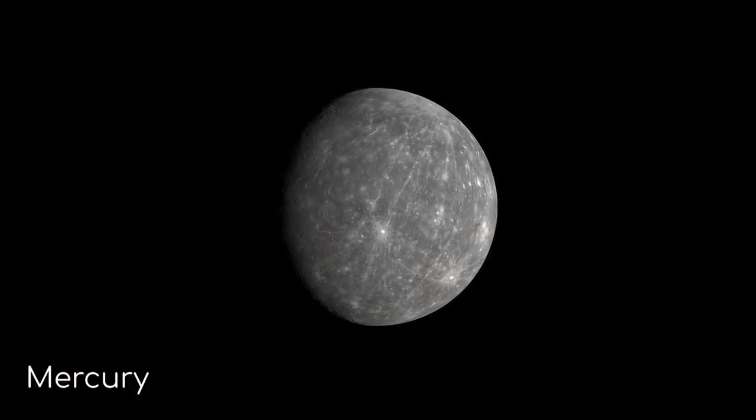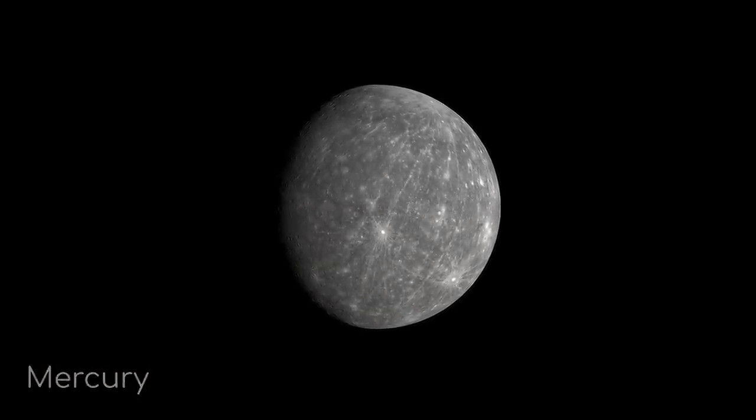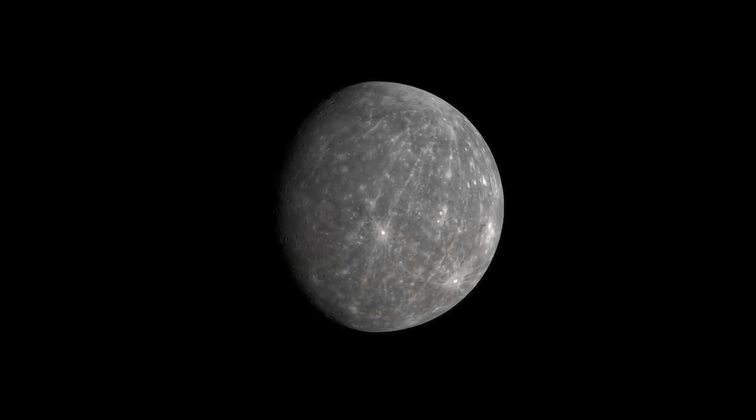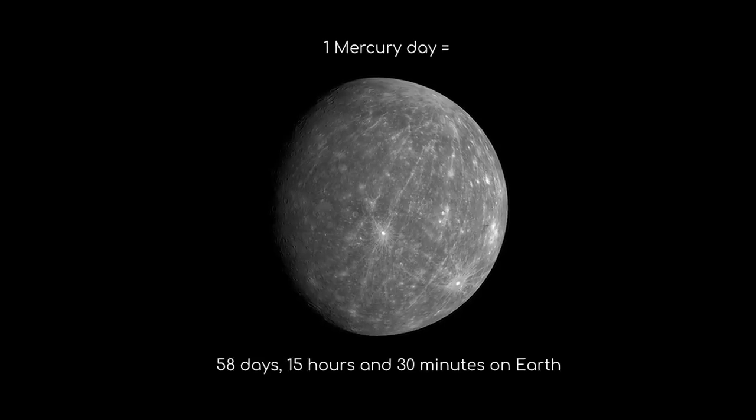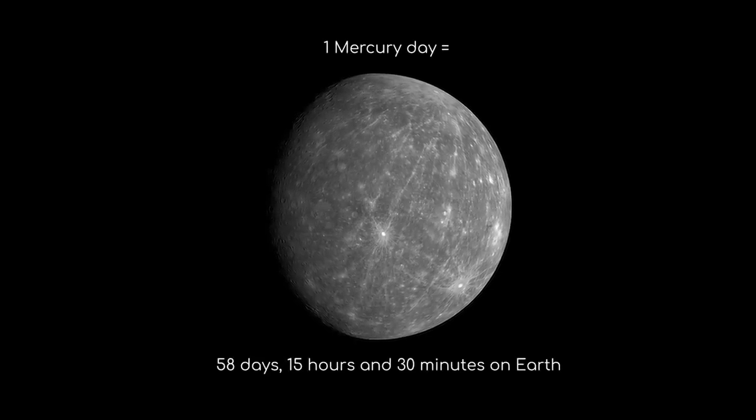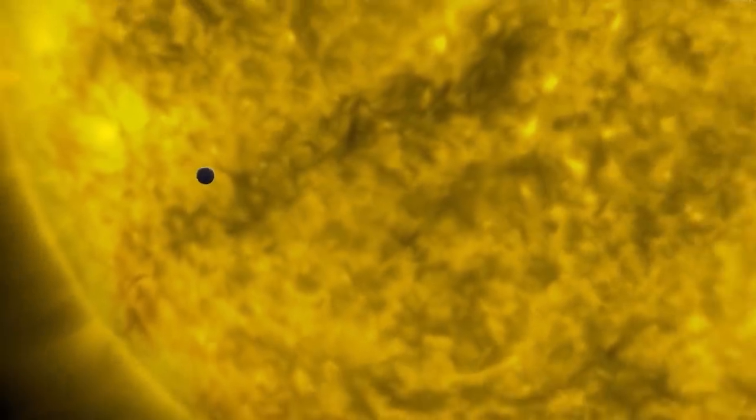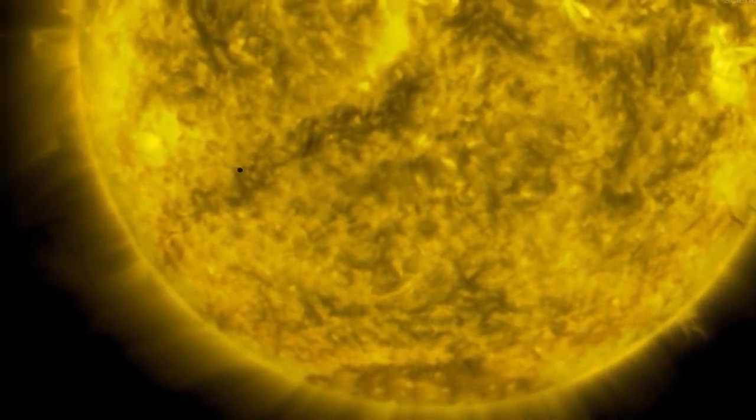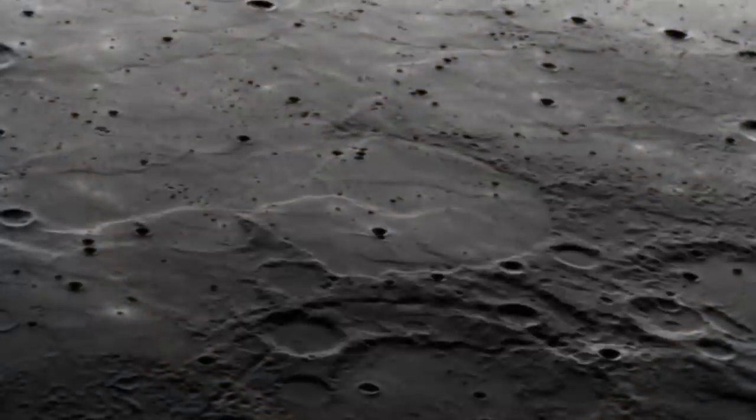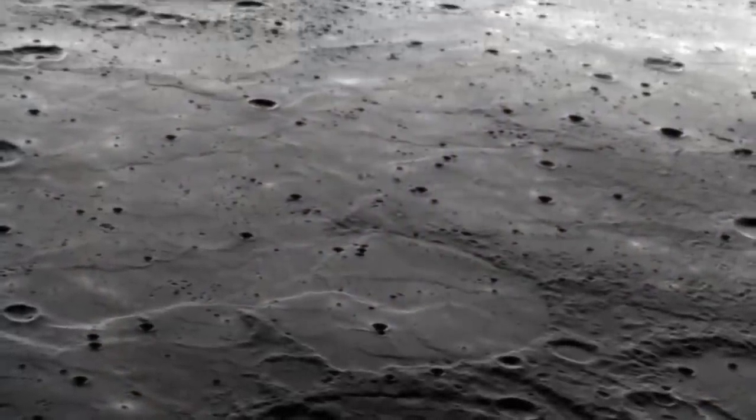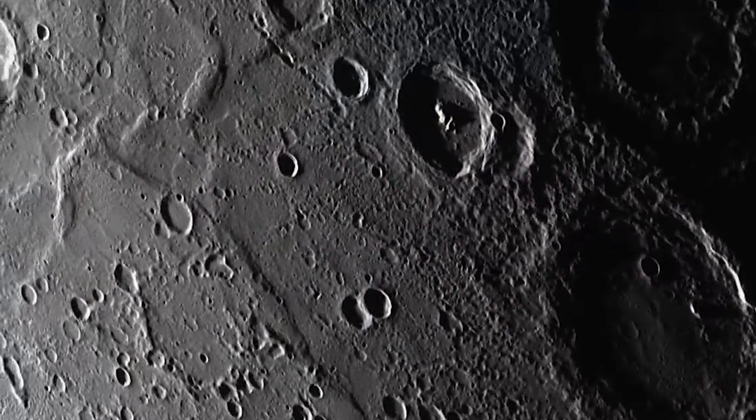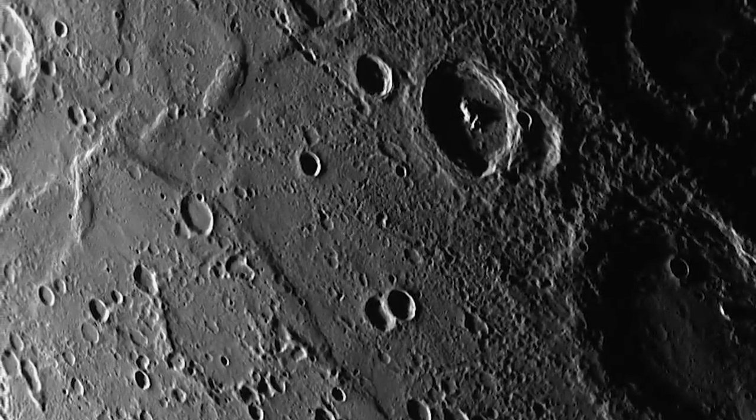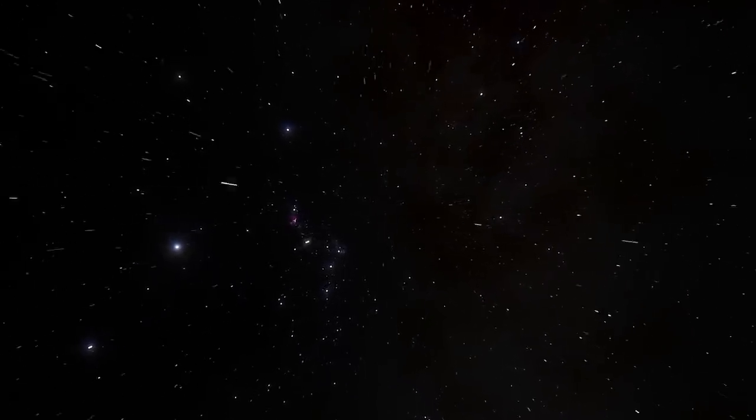Time moves slower on Mercury than it does on Earth. A day on Mercury is 58 days, 15 hours and 30 minutes on Earth. We can tell this by observing Mercury through telescopes and timing how long it would take for Mercury to complete one full orbit around the Sun. However, if we travelled to Mercury and started our timer there, we would not get the same figure. This is because time does not move as constantly as you might think.